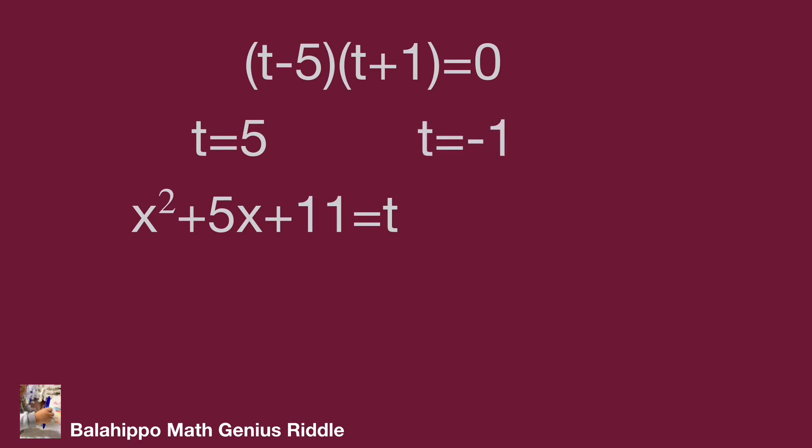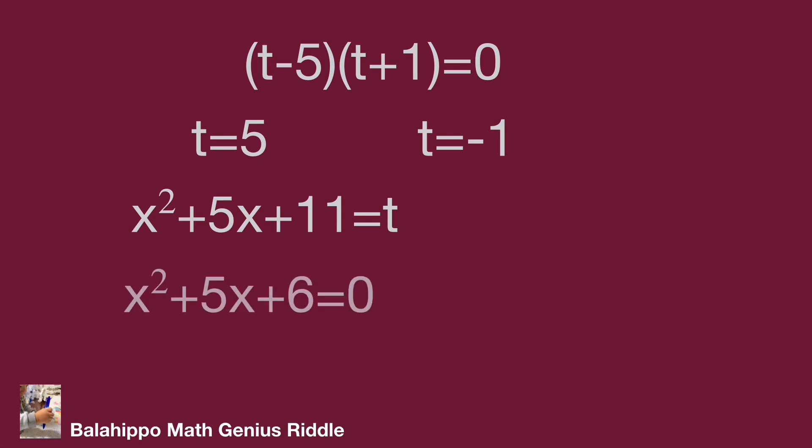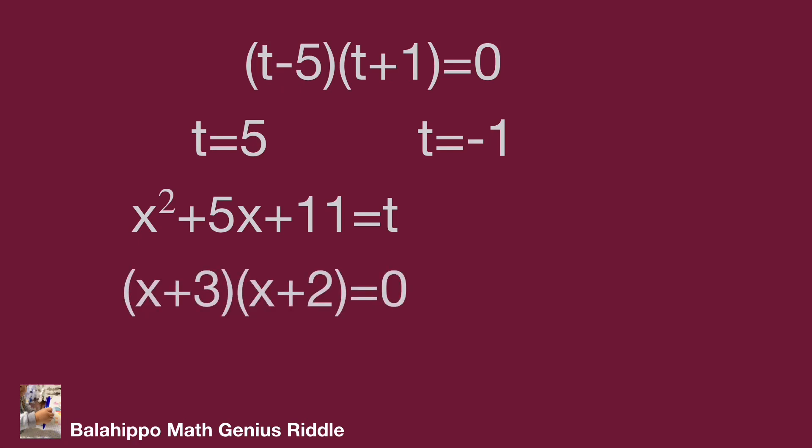When t equals 5, then x squared plus 5x plus 11 equals 5, giving x squared plus 5x plus 6 equals 0. Factorizing as quantity x plus 3 times quantity x plus 2 equals 0. The answers are x equals minus 3 or x equals minus 2.